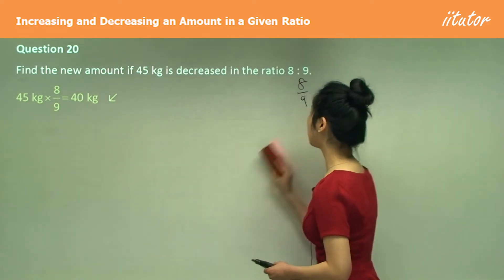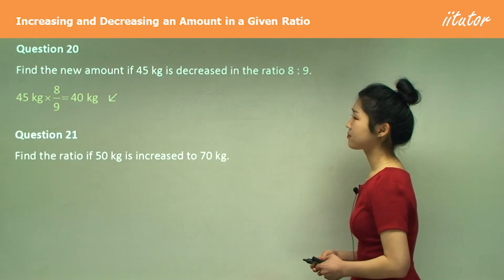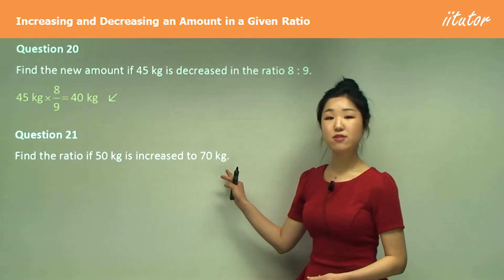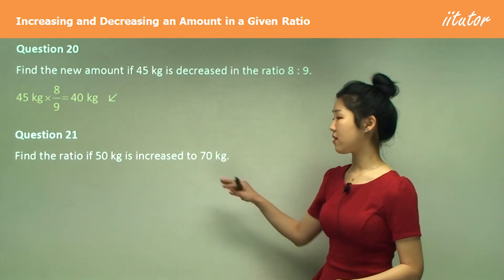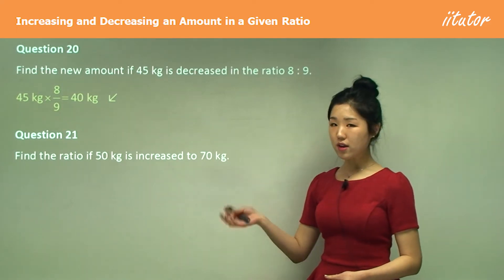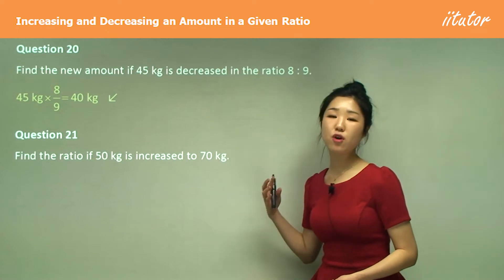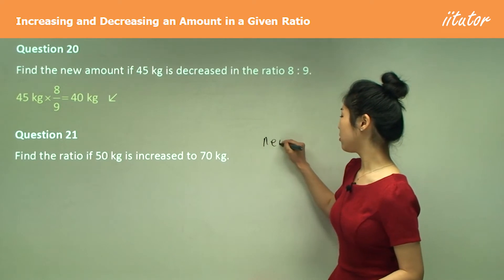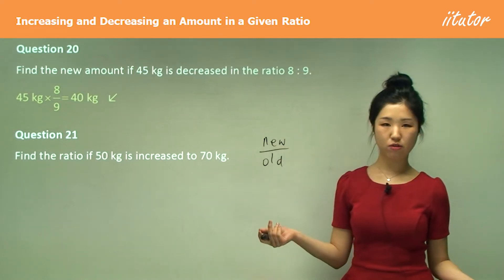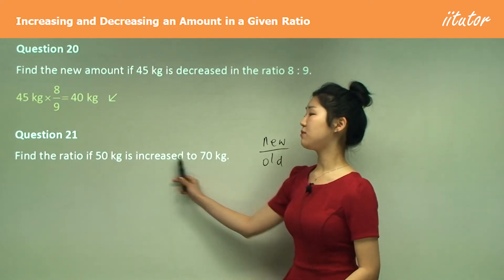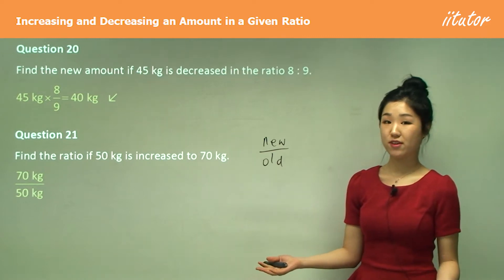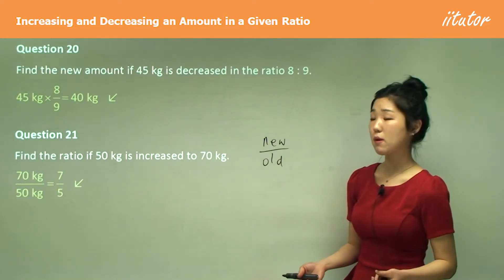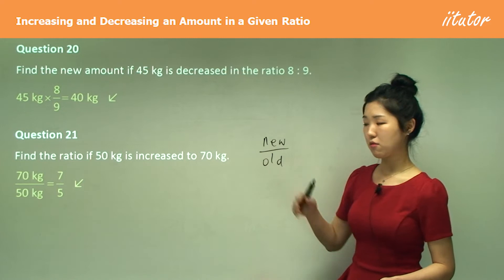Question 21: find the ratio if 50 kilograms is increased to 70 kilograms. This time they're not giving us the ratio but the value it increased to. Always put the new amount on the numerator and the original amount on the denominator — new over old. The new amount is 70 and the old amount is 50, so write 70 over 50 and simplify. Divide top and bottom by 10 to get 7 over 5. Remember, ratios don't have units, so remove them.